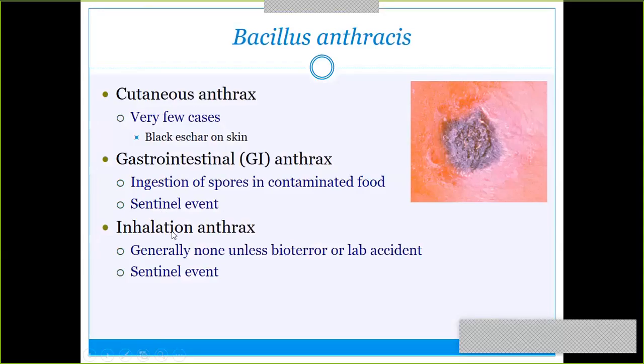Bacillus anthracis is a gram-positive rod. It can cause three different forms of anthrax: cutaneous, GI, or respiratory. Cutaneous produces black skin ulcers. GI comes from ingesting the spores. Inhalation anthrax is typically due to a bioterrorism event or a bad lab accident. It is also nicknamed 'wool sorter's disease,' coming from shearing sheep with spores embedded in their wool, since anthrax can be found in the soil.